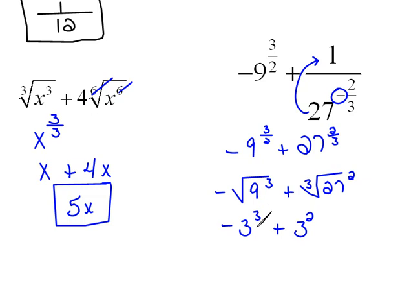So, now, negative 3 cubed would be negative 27 plus 3 squared is 9 and negative 27 plus 9 is negative 18.